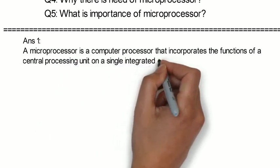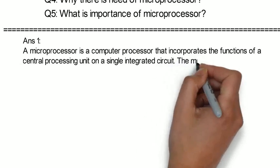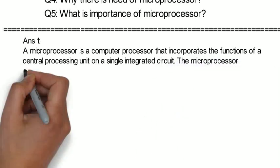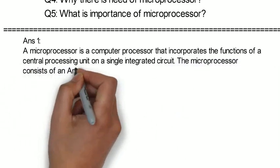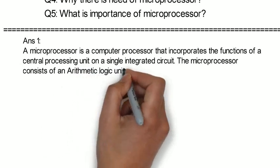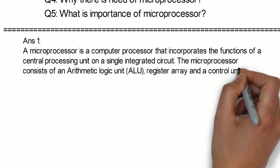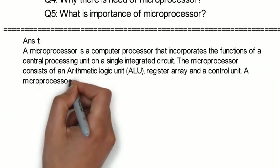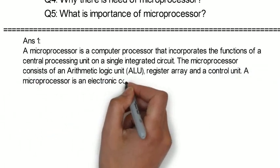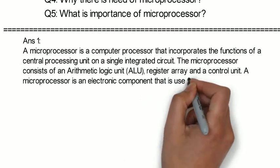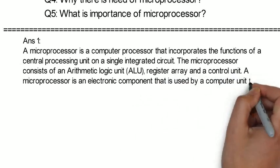The microprocessor consists of an arithmetic logic unit, a register array and a control unit. A microprocessor is an electronic component that is used by a computer unit to do specific tasks and desired processing.